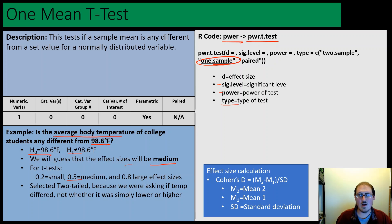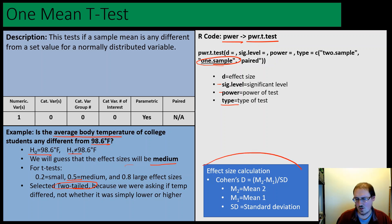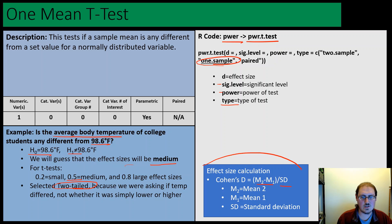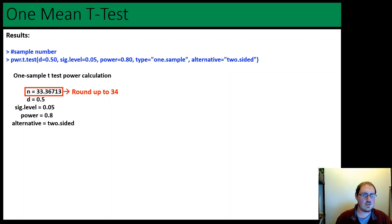Another thing you don't have to set but can set is the tails of your test. It defaults to two-tailed, but we're going to explicitly say two-tailed just to get in the practice of it, because we're asking if temperature is different — not if it's higher or lower. The effect size for a t-test is Cohen's d: it's essentially just the difference in the means divided by the standard deviation. We'll use that in the practice examples.